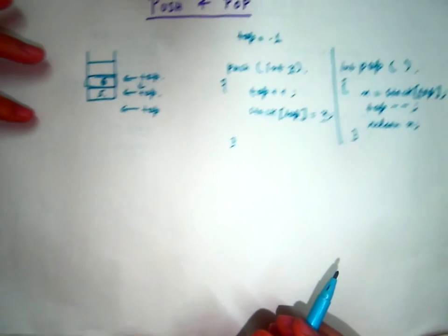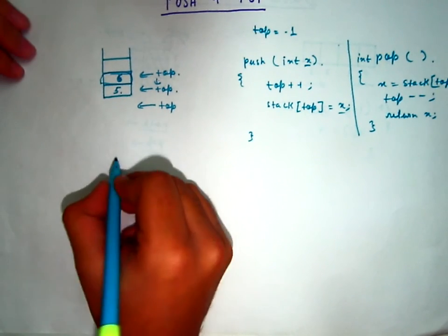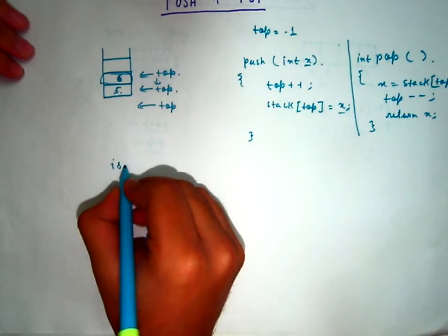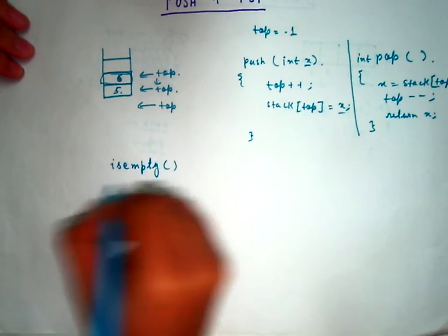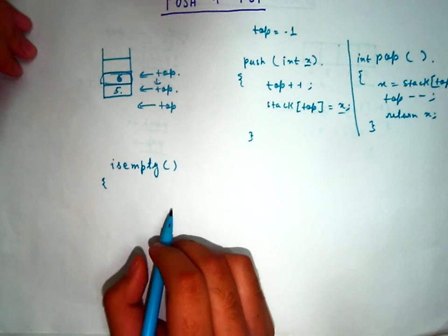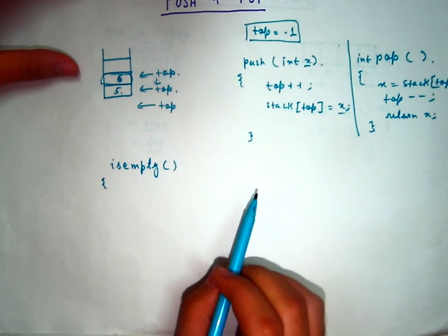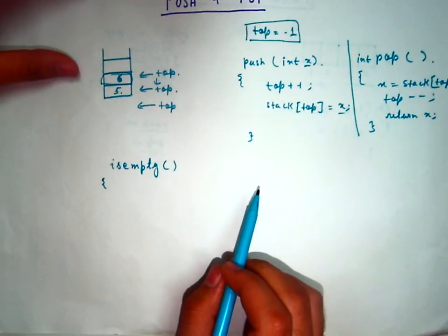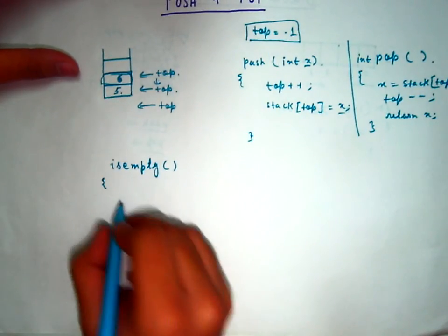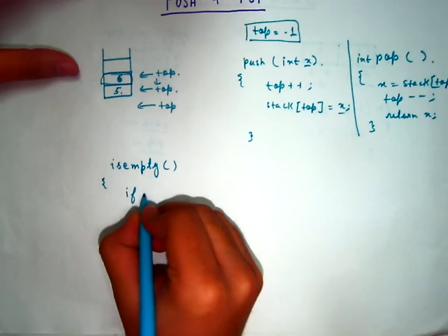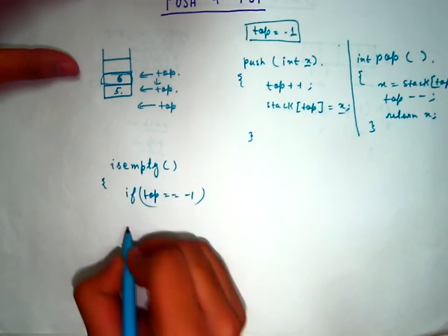Now there are two other functions which are important in stacks. Is a function to check if the stack is empty or not. Now remember we assign the top value minus one when the stack was empty. We can use this as a condition in our function. Like if top equals to equals to minus one, the stack is empty.